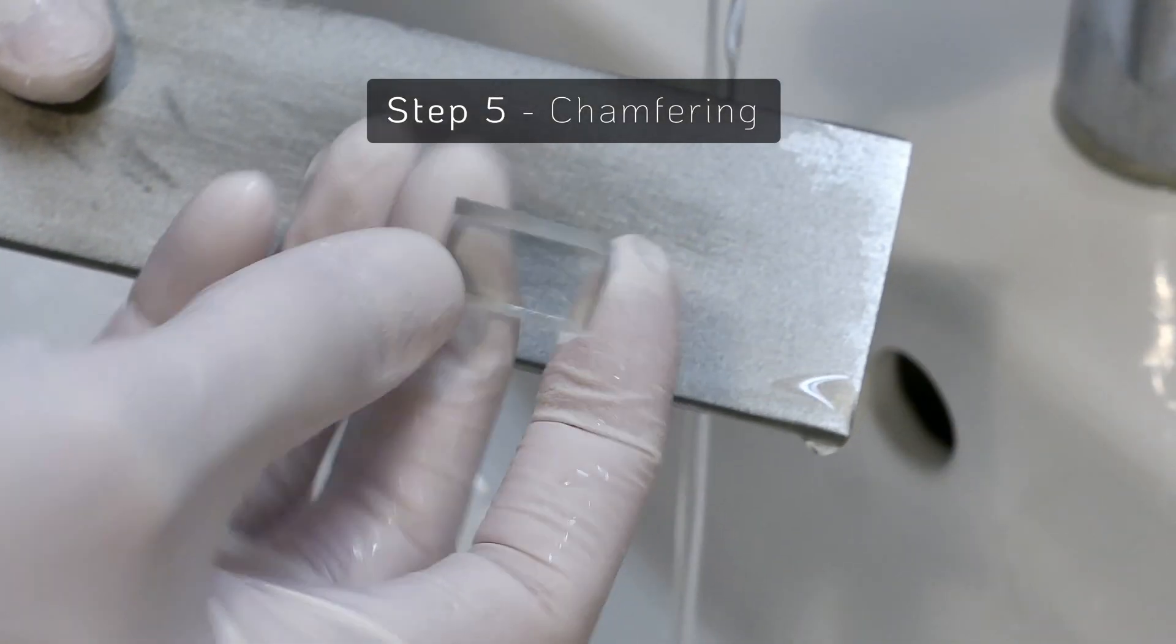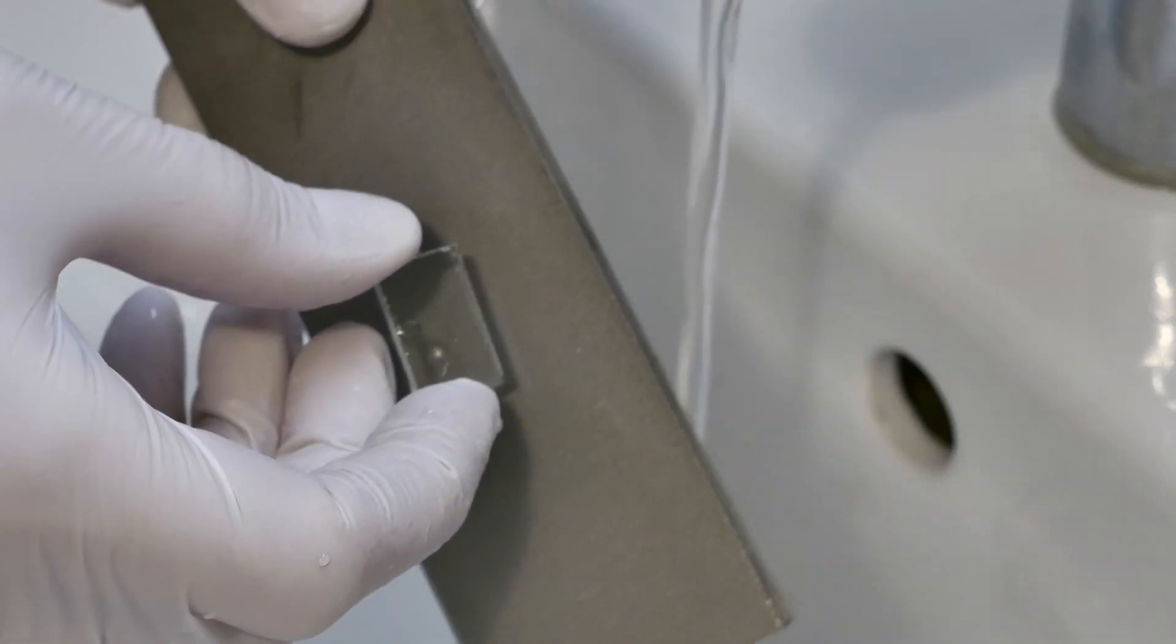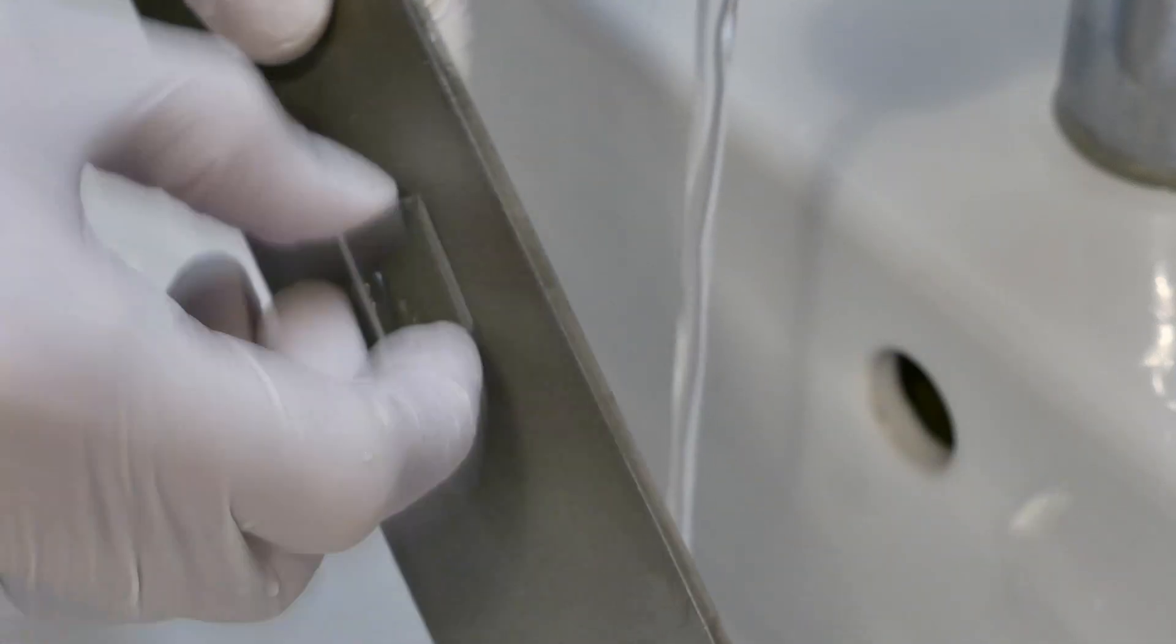When all four sides are done, the edges can be chamfered by hand. According to the 3D model from the beginning, one edge gets a larger chamfer.